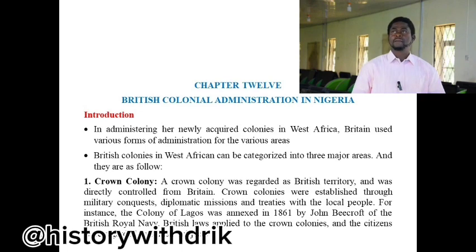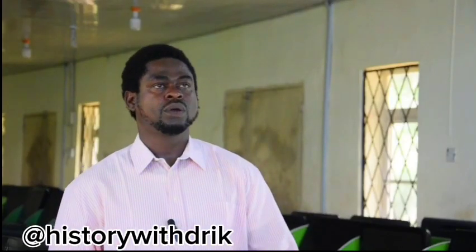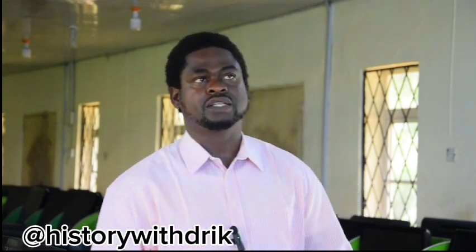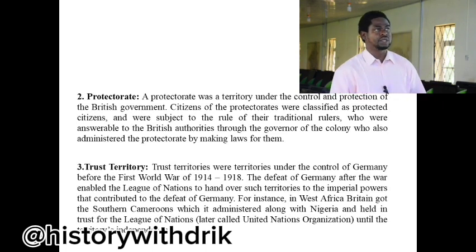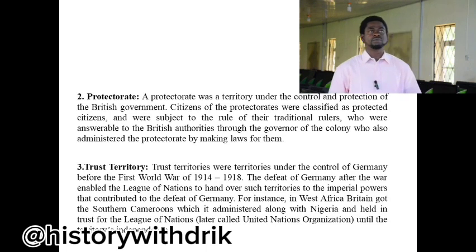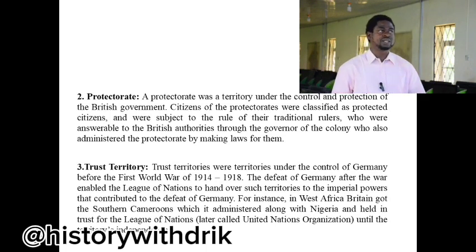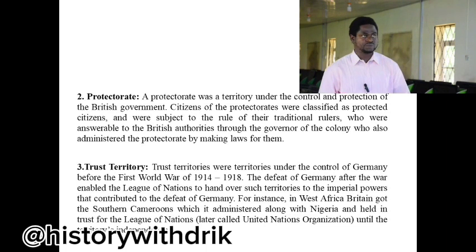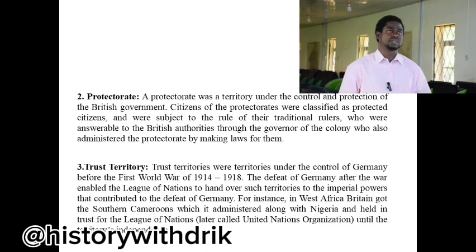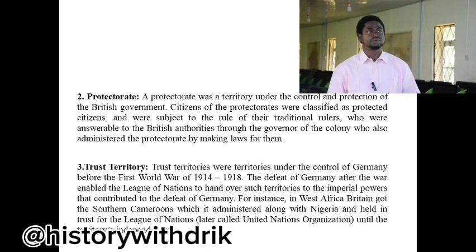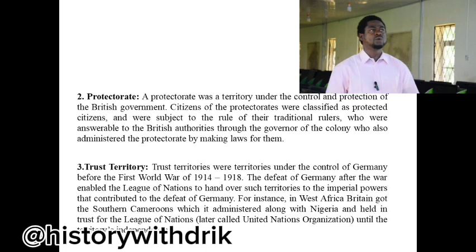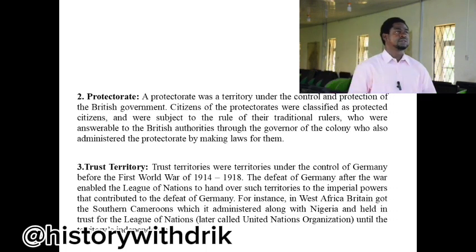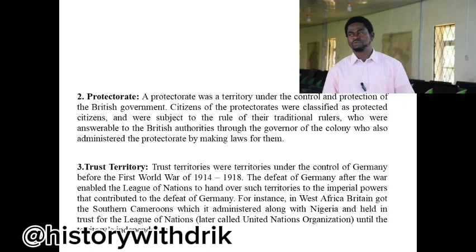The second administrative method Britain used is known as protectorate. A protectorate is seen as a territory under the control and protection of the British government. Citizens of the protectorate were classified as protected citizens and were subject to the rule of their traditional rulers, who were answerable to the British authorities through the governor of the colony.